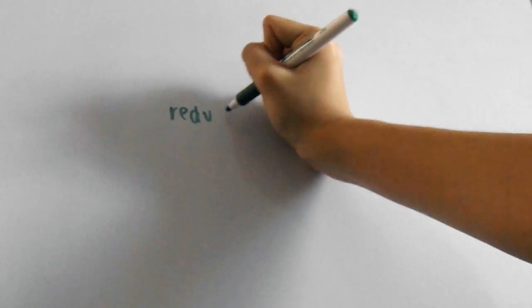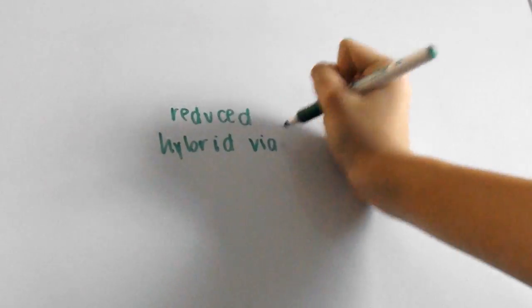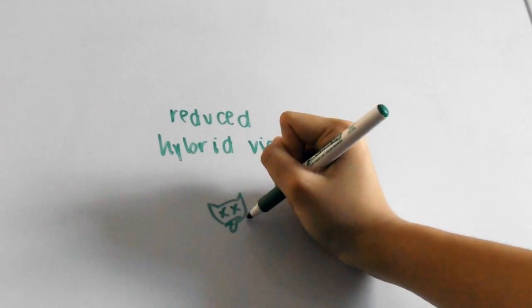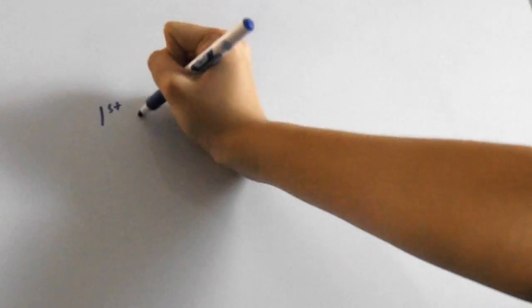Reduced hybrid viability is seen when offspring are in fact produced, but the development or survival of the offspring is hindered due to genetic factors.